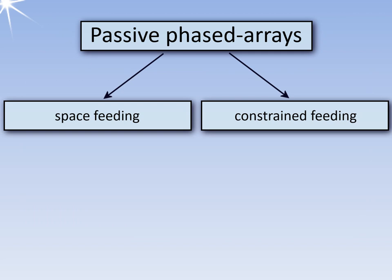The summation of the possibly large number of array channels can be done either by free space or a network. With space-fed antennas, the phased array works as a filter switched into the radiation path of a primary radiator. In the case of constraint-fed antennas, the phased array antenna is the primary radiator.